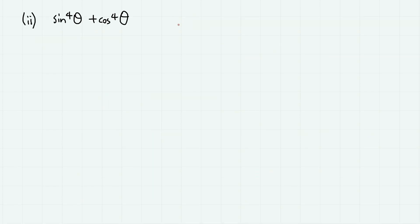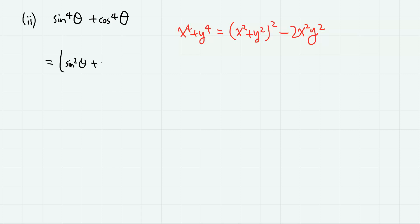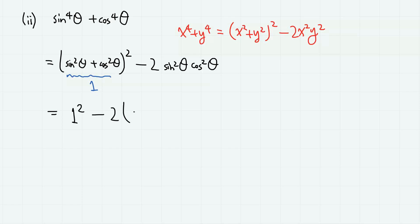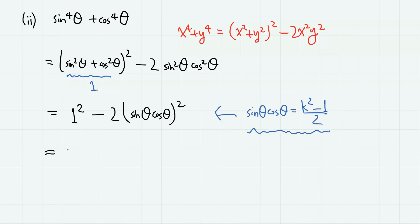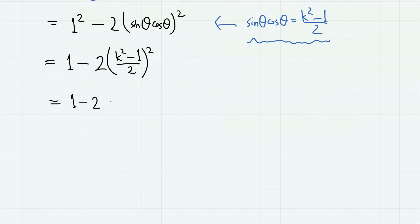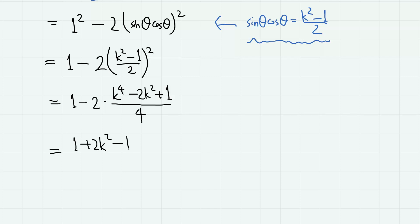Next, the sum of powers of 4. Here we apply the relation: x to the 4 plus y to the 4 equals x square plus y square, squared, minus 2 x square y square. So we have sine square theta plus cosine square theta, squared, minus 2 sine square theta cosine square theta. This equals 1 squared minus 2 times (sine theta cosine theta) squared. Applying the result sine theta cosine theta equals (k square minus 1) over 2, we have 1 minus 2 times (k square minus 1) over 2, squared. Expanding, we get 1 minus 2 times (k to the 4 minus 2k square plus 1) over 4, which gives (1 plus 2k square minus k to the power 4) over 2. This is the answer.